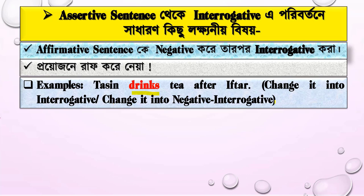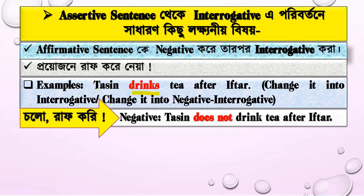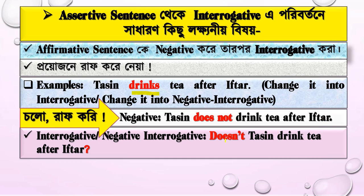Now let's do some rough work. First, take the sentence 'Tassin drinks tea.' We first make it negative: 'Tassin doesn't drink tea.' Then we change it into interrogative: 'Doesn't Tassin drink tea?' with a question mark.